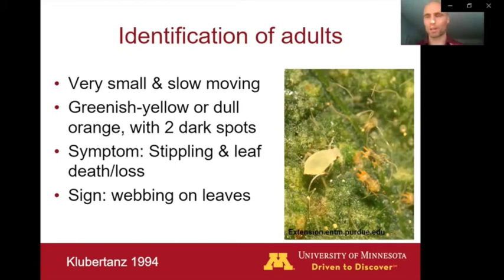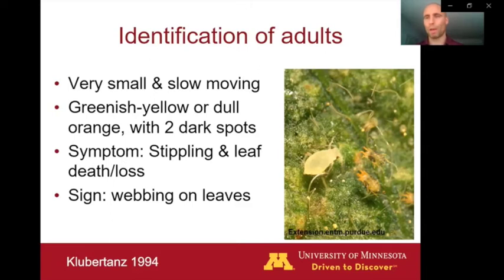Some of the symptoms are stippling of the leaves — these tiny little discolored spots on the leaves where the mites have been feeding. As that infestation advances, we can actually get the death of the leaves and loss of the leaves on the plants. And then a sign of their infestation is webbing that the mites leave on the leaves as they're walking around. That's where they get the name spider mites, because they're producing a webbing kind of like a spider silk that they leave across the leaves.